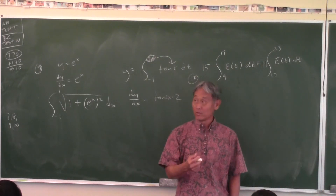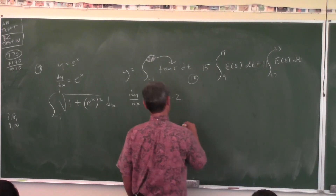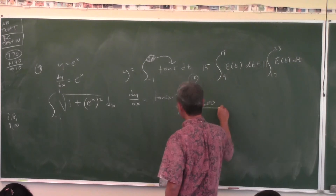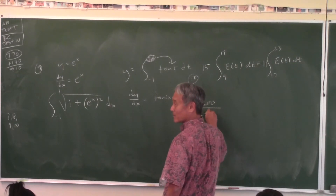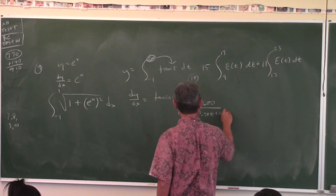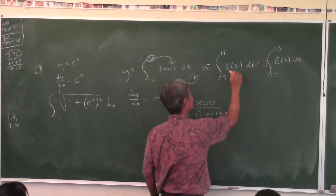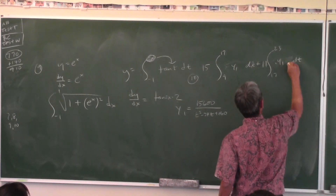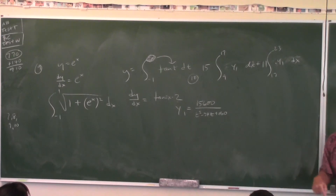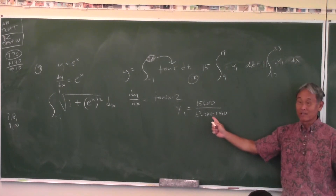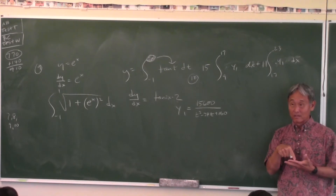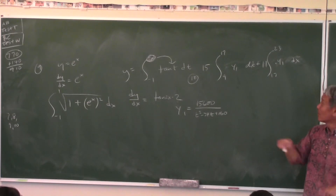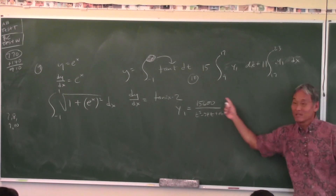Let me give you a tip for those using a calculator. I would go y1 equals this function. Punch this in — t squared minus 24t plus 160, for example. Then put y1 in the integral. You define this on your calculator as y1 in the graphing mode, and when you go to run matrix mode and punch in the integrals, you just put y1 there — you don't have to type in the whole thing.